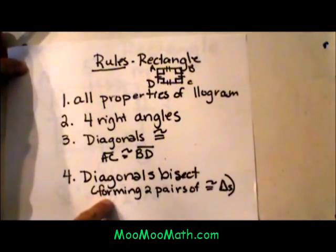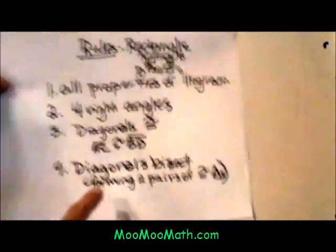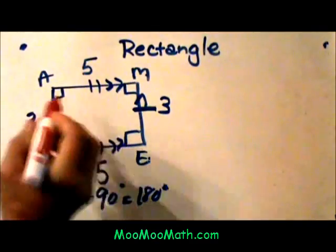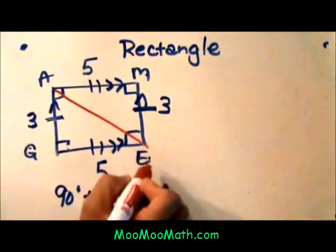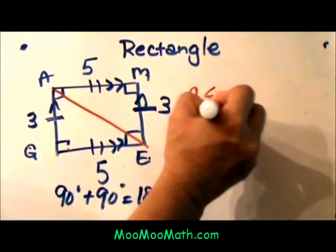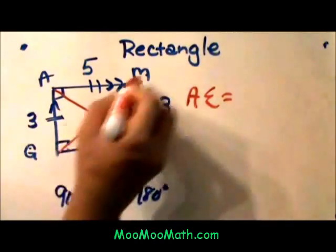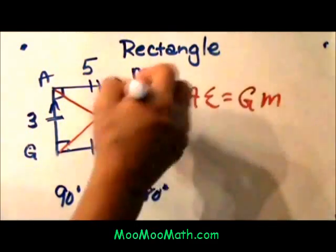And then the diagonals also bisect, forming pairs of congruent triangles. Let me show you that concept. So if I draw a diagonal from A to E, that segment is equal to GM.